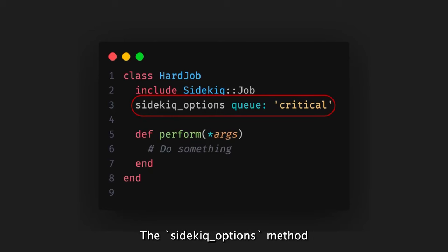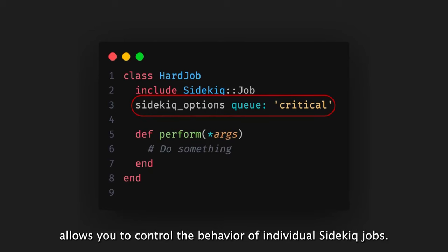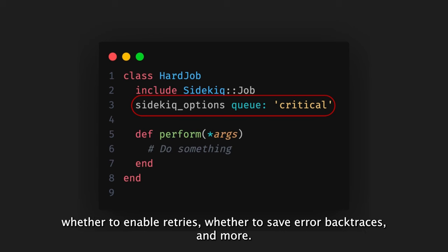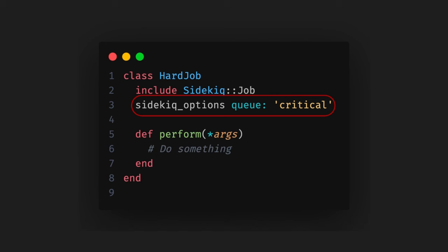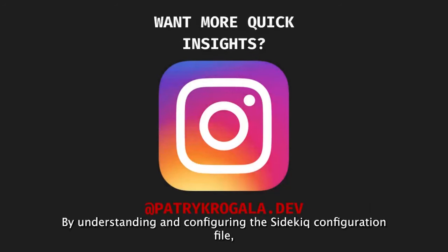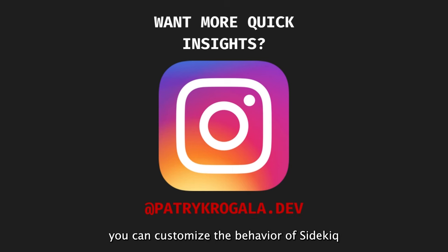The Sidekiq options method allows you to control the behavior of individual Sidekiq jobs. You can specify options such as the queue to use, whether to enable retries, whether to save error backtraces, and more. Default options for all jobs can be set using Sidekiq.default_job_options. By understanding and configuring the Sidekiq configuration file, you can customize the behavior of Sidekiq according to your specific needs.